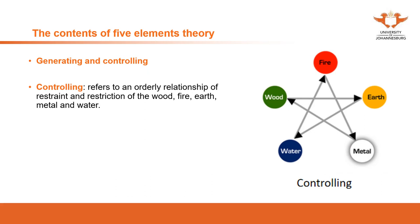The controlling refers to an orderly relationship of restraint and restriction among wood, fire, earth, metal, and water. This is another relationship — restraint and restriction. So from generating, which promotes, supports, and benefits, we move to controlling, which restrains and restricts. The wood controls the earth, the earth controls the water, the water controls the fire, the fire controls the metal, the metal controls the wood. So when you link everything together, it becomes like a star.